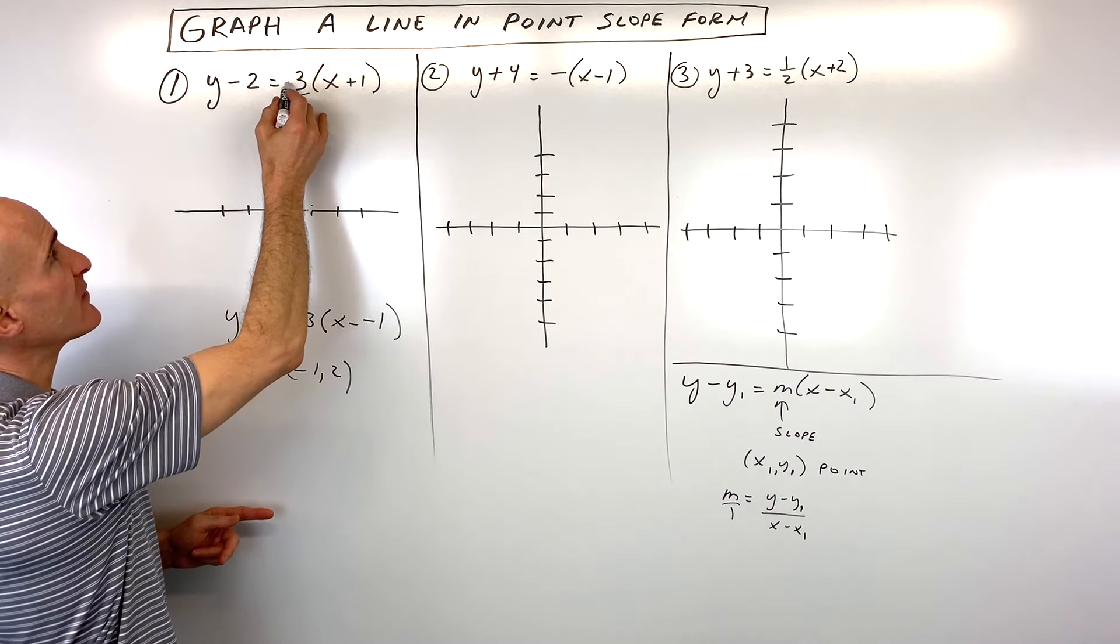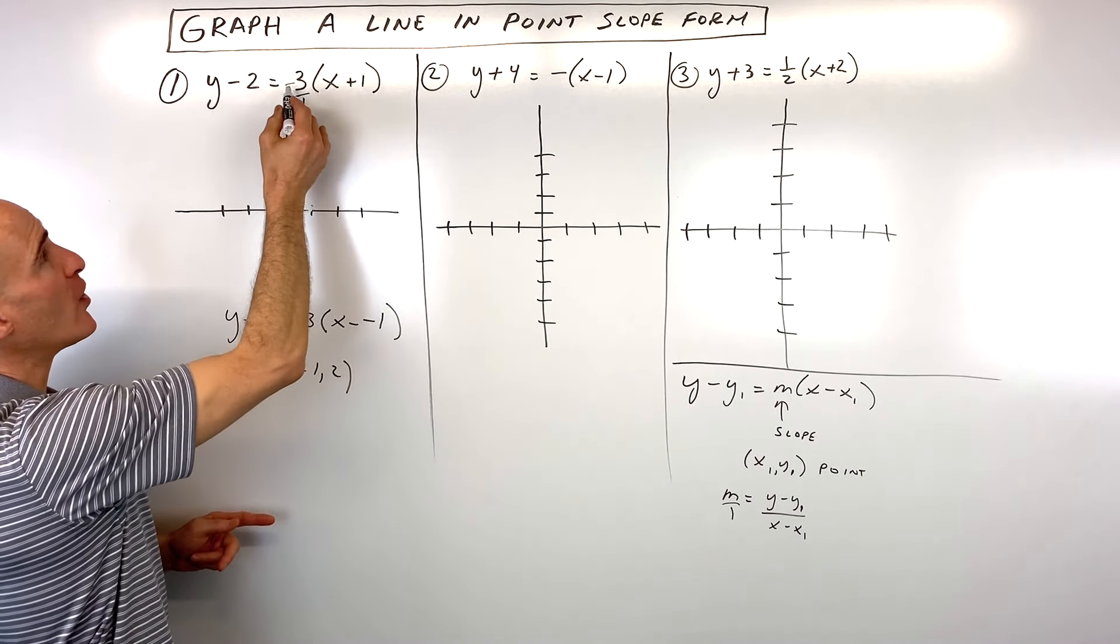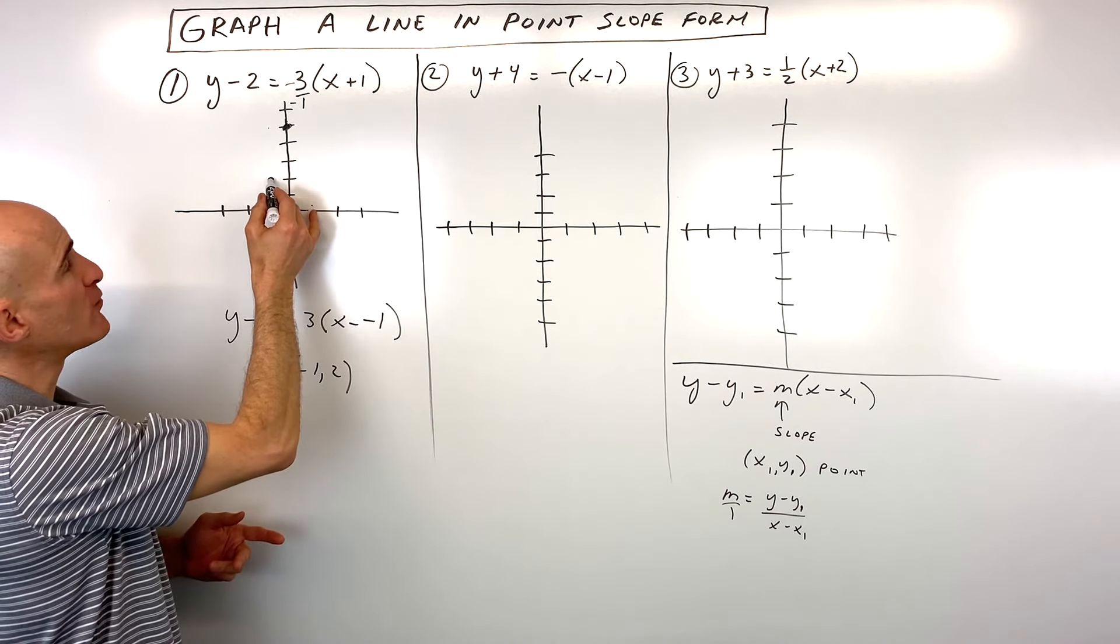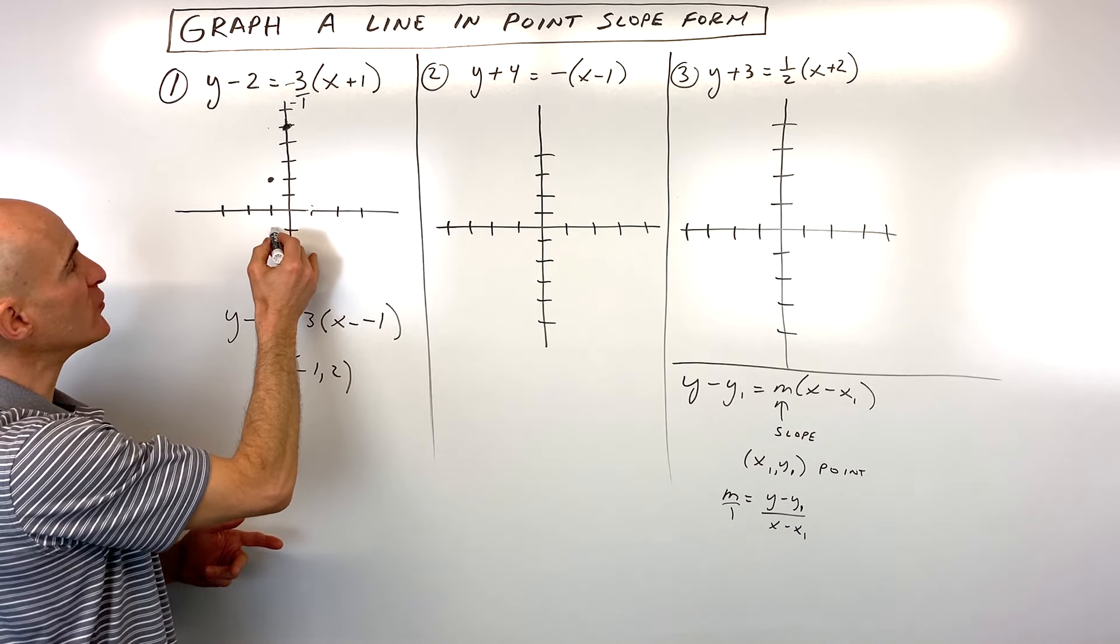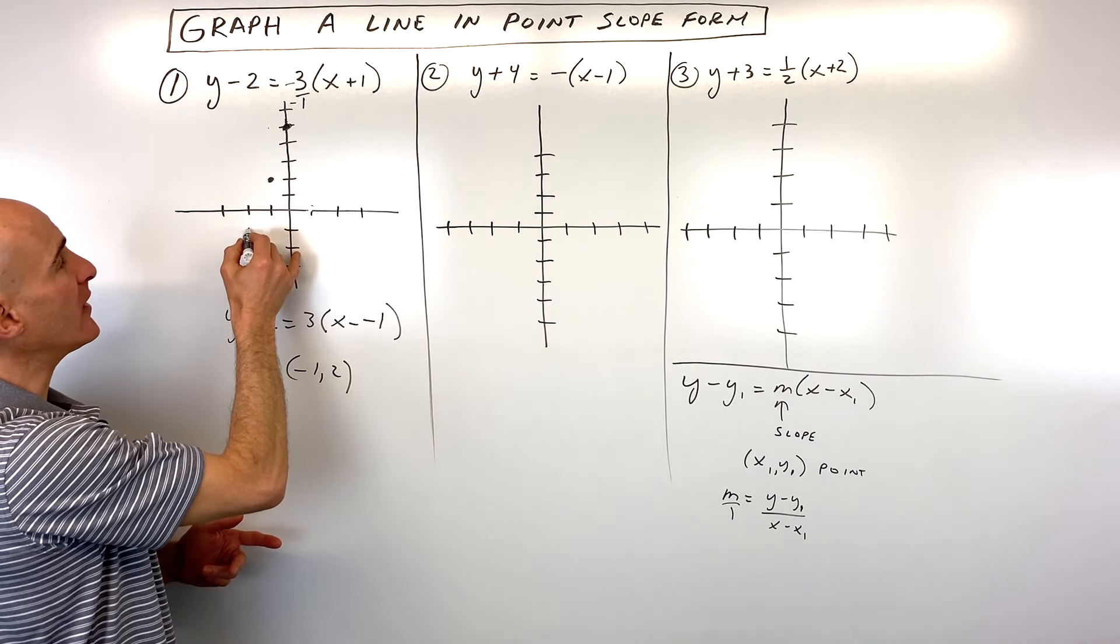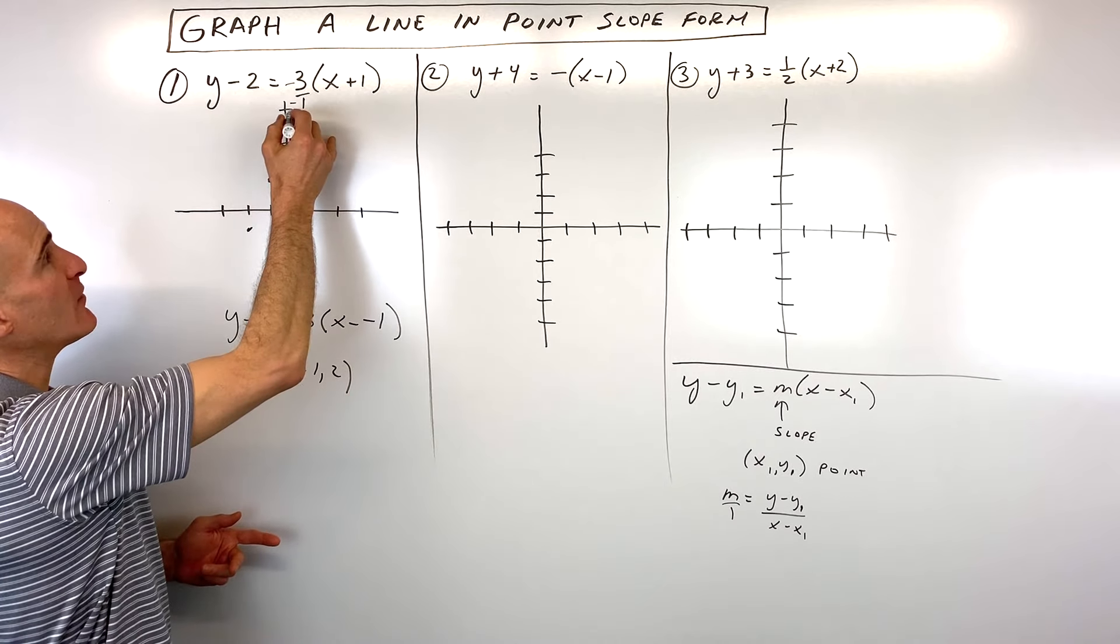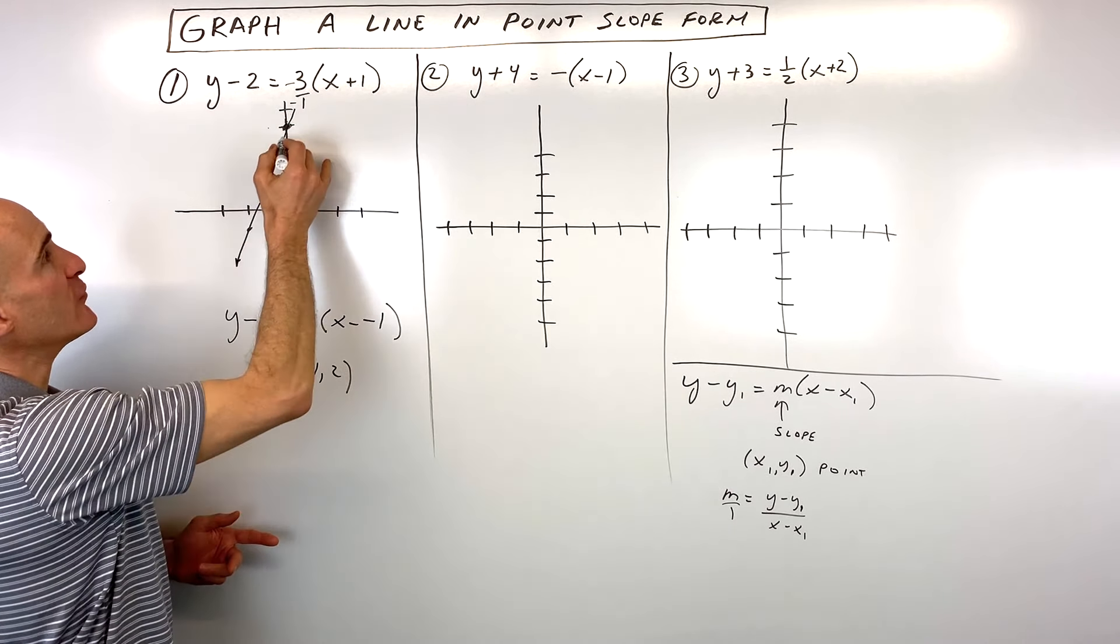We can also reverse that. We can think of that as negative 3 over negative 1 because the two negatives cancel. And from this point, we can go down 1, 2, 3, and then left 1. You can see we're still getting the same line, and you've got it.